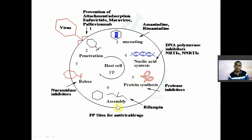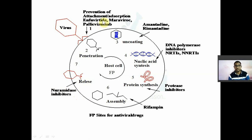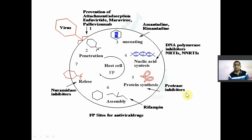After packing, the virus matures and is released. Neuraminidase is the enzyme with an important role in maturation and release. Neuraminidase inhibitors are used to block this step. So to summarize the sites: drugs like Enfuvirtide, Maraviroc, Palivizumab prevent attachment; Amantadine and Rimantadine prevent uncoating; DNA polymerase inhibitors, nucleotide and non-nucleotide reverse transcriptase inhibitors prevent DNA replication; protease inhibitors prevent protein maturation; Rifampicin prevents assembly; and neuraminidase inhibitors prevent release.